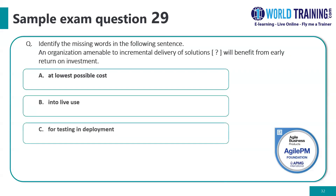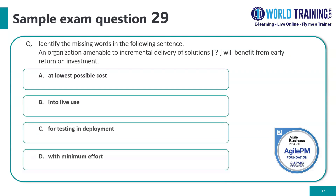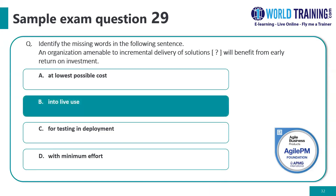Question number twenty-nine: identify the missing words in the following sentence — 'An organization amenable to incremental delivery of solutions [blank] will benefit from early return on investment.' The answer is B: into live use.